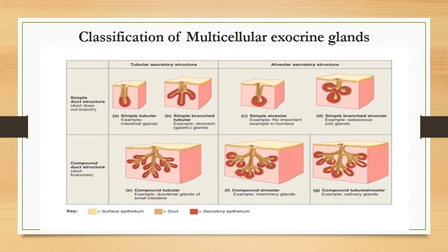In compound types of glands, the duct is branching. The acini or secretory portion can be tube-like, alveolar-like, or both — in which case we call them compound tubulo-alveolar glands, for example the salivary glands. Compound alveolar glands include the mammary glands, while compound tubular glands include the duodenal glands (Brunner's glands), which are the best example of compound tubular glands.